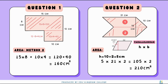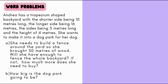Once we have learned about more complicated shapes, let's have a look at some word problems. This word problem says Andrea has a trapezium-shaped backyard, with the shorter side being 10 meters long, the longer side being 16 meters long, the sides being 5 meters long, and a height of 4 meters. She wants to make it into a dog park. Part A says she needs to build a fence around the yard, and she bought 30 meters of wood. Will she have enough to fence the whole backyard? If not, how much more does she need to buy?